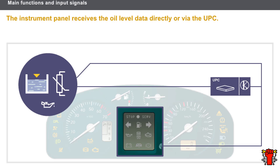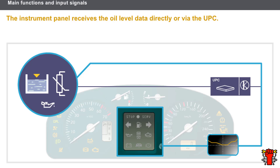Let's see how an oil level indicator works. An oil level sensor is a hot wire semiconductor located in the oil sump. The oil level sensor can communicate directly with the Instrument Panel, or it can communicate with the Protection and Switching Unit, or UPC. The UPC sends the oil level data to the Instrument Panel. An oil level warning light comes on when the oil level is too low, and the service indicator light also comes on.